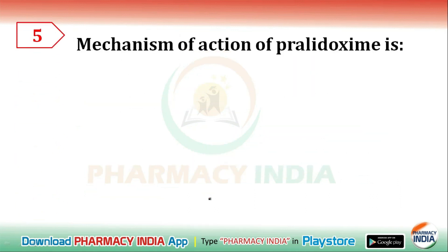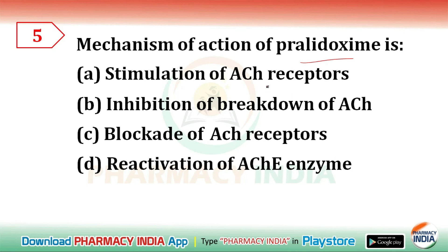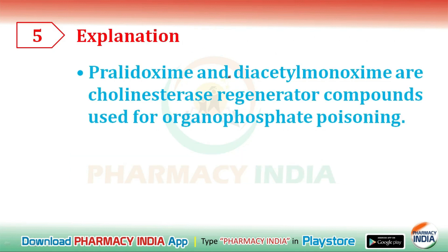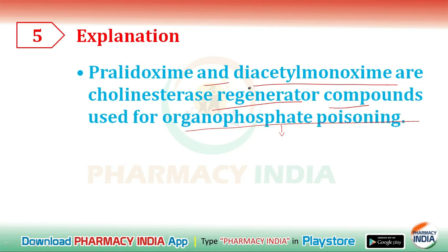Next question: the mechanism of action of pralidoxime is — stimulates acetylcholinesterase receptors, inhibition of breakdown of ACh, blockade of ACh receptors, or reactivation of AChE enzyme? The correct answer is reactivation of AChE enzyme. Pralidoxime and diacetylmonoxime are cholinesterase regenerator compounds used for organophosphate poisoning.